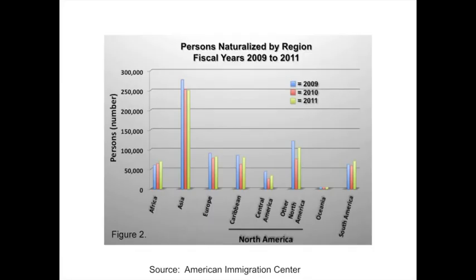I want to walk through these quickly because they teach us a lot about our ideals and ambitions for those who are joining us as citizens. But first, I think it's useful to look at some data about who these people are — who has joined us as citizens in recent years. This is a chart from the American Immigration Center showing persons naturalized by region of the world from 2009 to 2011. You can see that persons who have naturalized predominantly come from Asia, followed by other North America — referring to Canada and Mexico — then the Caribbean, Europe, Africa, South America, Central America, and so on.